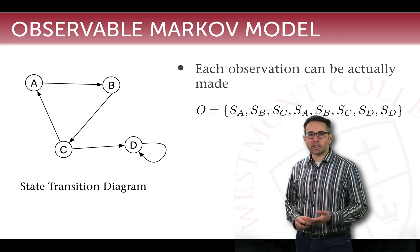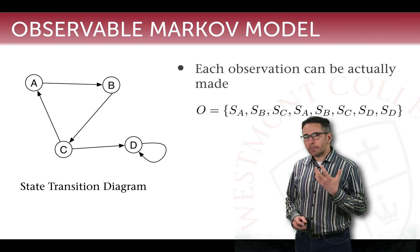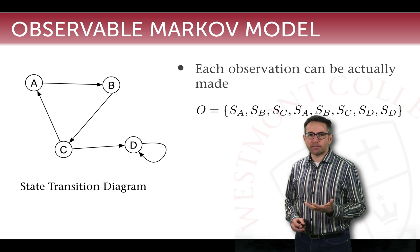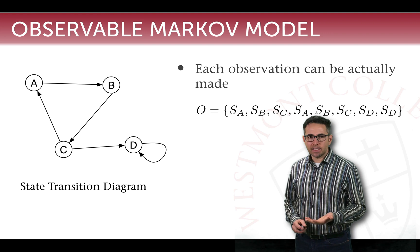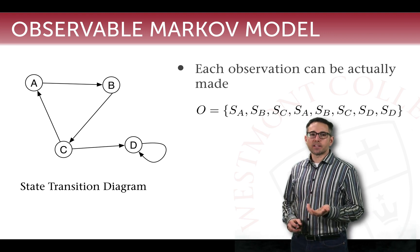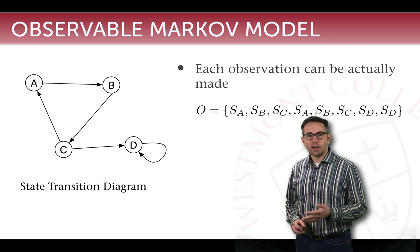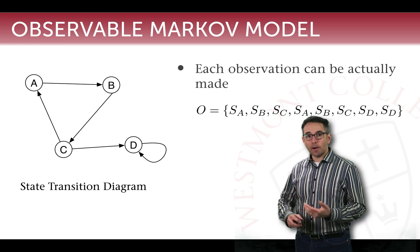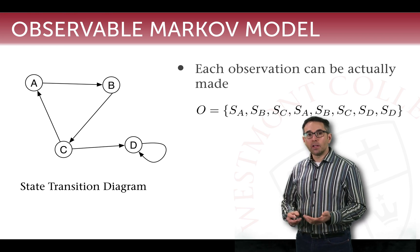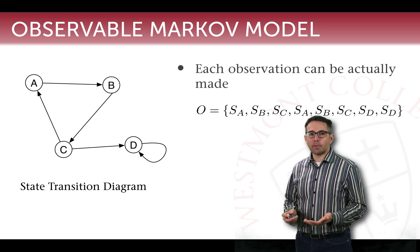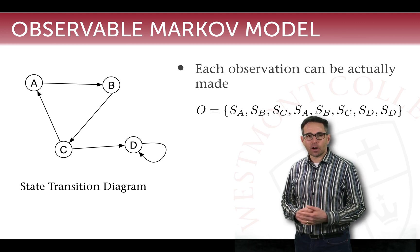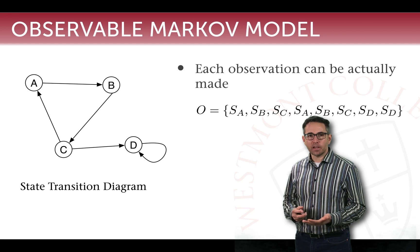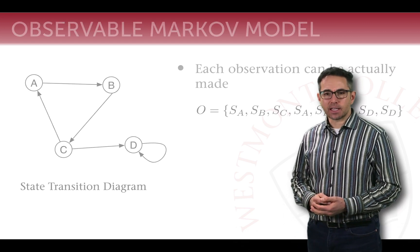The nature of observing which state we're in is why it's called an observable markup model — we can tell which state we're in. Applied to different situations like the strands of a DNA sequence or the sequence of things purchased from a vending machine, we can observe them and build a model identifying, for example, what is the probability that if you had an A on the rung of your DNA sequence, the next rung would be C.